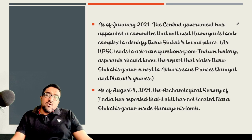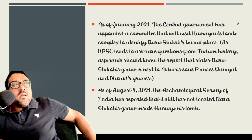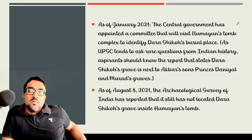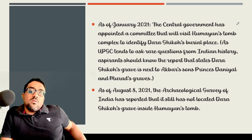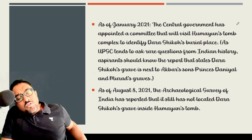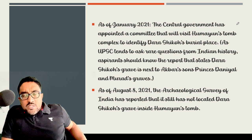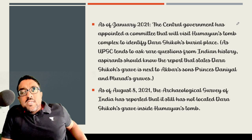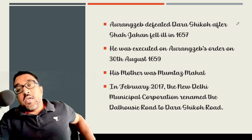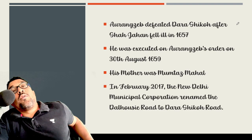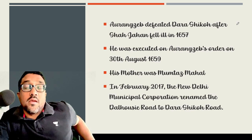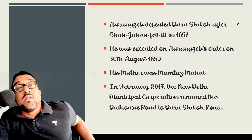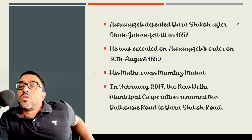In 2021, the Central Government appointed a committee mainly to visit Humayun's tomb and identify Dara Shikoh's burial place, because Dara Shikoh was killed by Aurangzeb, but after killing him, Aurangzeb did not bury him simply — he actually tortured him. Dara Shikoh's grave is actually next to Prince Danyal and Murad's graves. As of August 2021, the Archaeological Survey of India reported that it still has not located Dara Shikoh's grave inside Humayun's tomb. Aurangzeb hated Dara Shikoh and considered him a competitor, because Dara Shikoh was anointed as the successor of Shah Jahan, which Aurangzeb did not like. Eventually, Aurangzeb defeated Dara Shikoh after Shah Jahan fell ill in 1657, and on Aurangzeb's order, Dara Shikoh was killed in 1659.